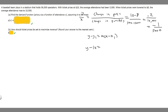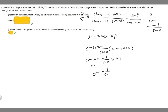So y minus 10 equals m, which is negative 1 over 5,000, times x minus 5,000. Simplifying: y minus 10 equals negative 1 over 5,000 times x, and then negative 1 over 5,000 times negative 5,000 is plus 1. Adding 10 to both sides, we get y equals negative 1 over 5,000 x plus 11. This is our demand function.